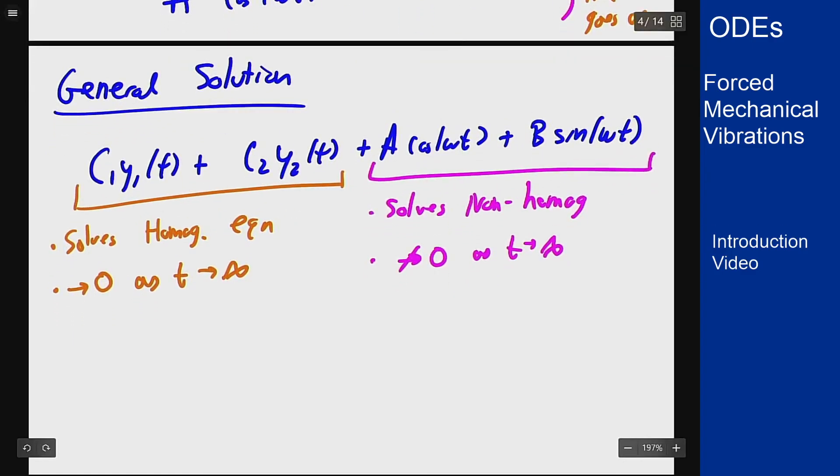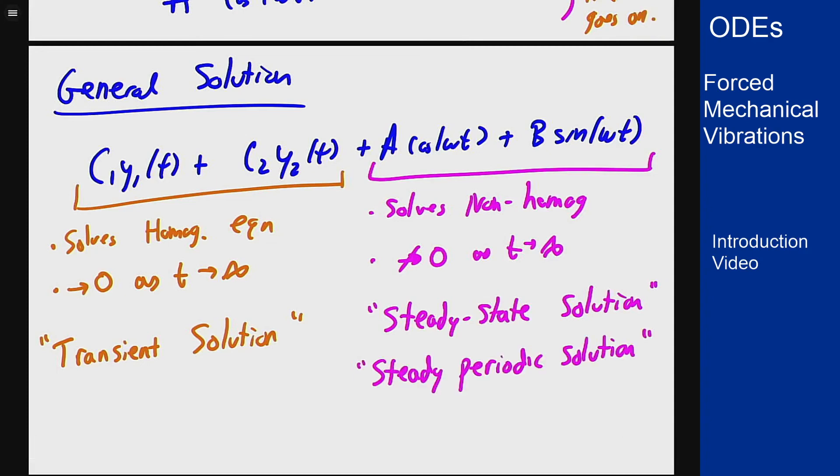So we give names to these two things. This part in orange that solves the homogeneous equation and goes to zero is what's called the transient solution—it's transient and sort of goes away with time. Whereas the part that sticks around forever and solves the non-homogeneous part is called the steady-state solution or the steady periodic solution. So the main point here is for a damped forced oscillation, I could always split the solution into two parts. There's the part that solves the homogeneous equation and is transient and is going to go away in time, and the part that solves the non-homogeneous, is derived from the forcing energy, and that's called the steady-state or steady periodic solution.